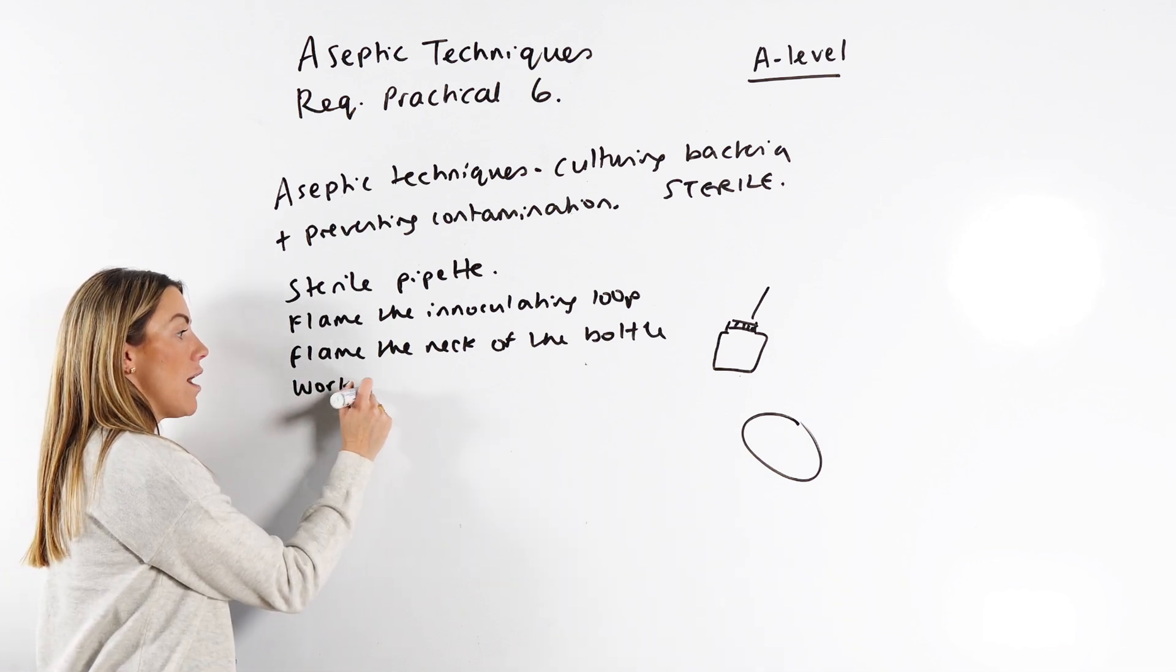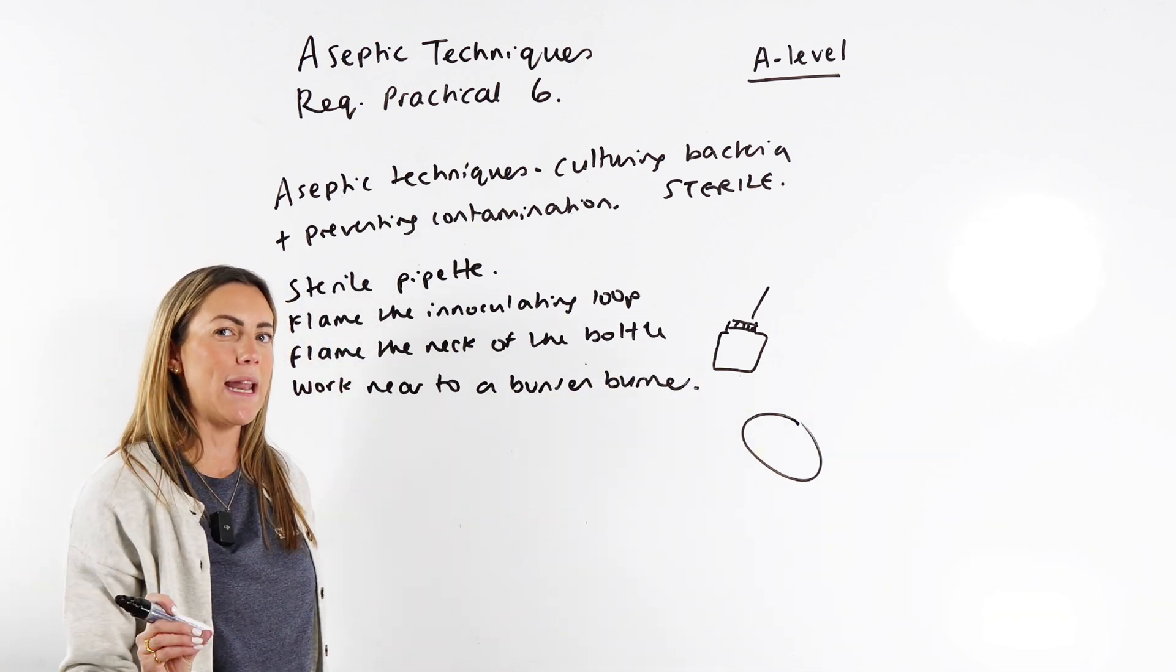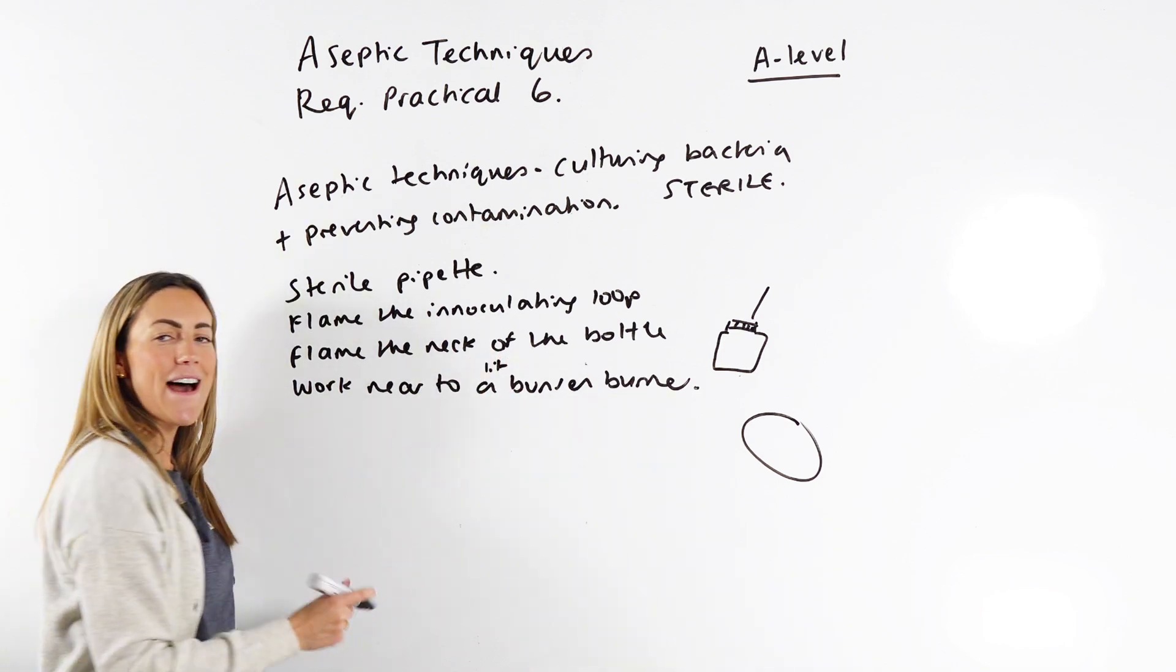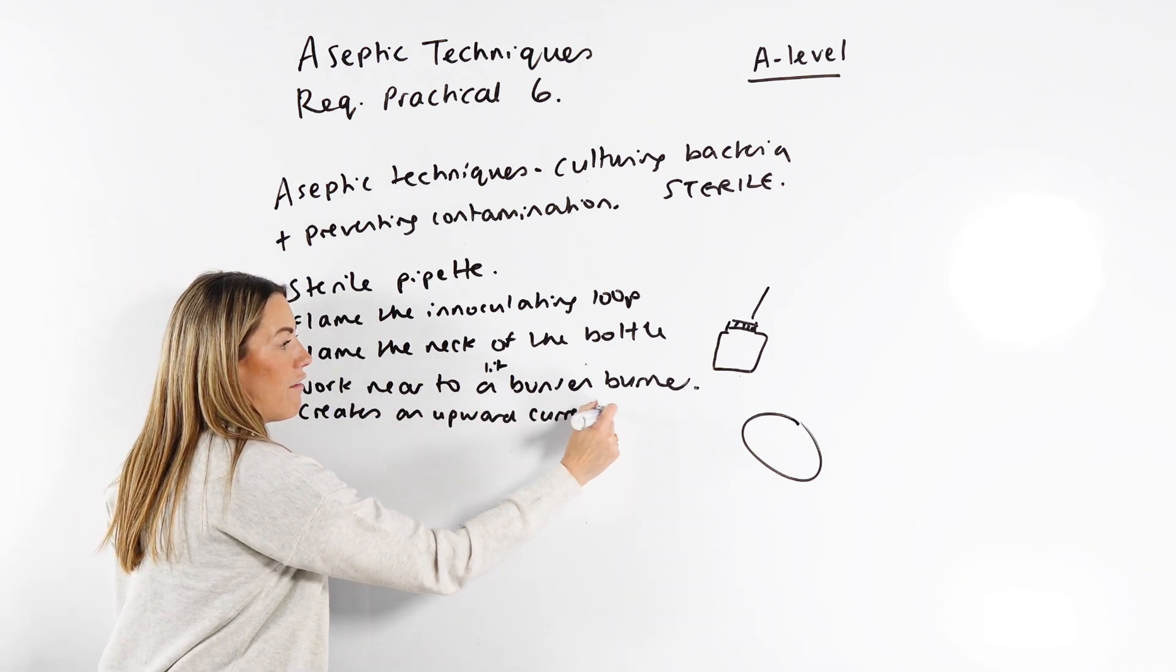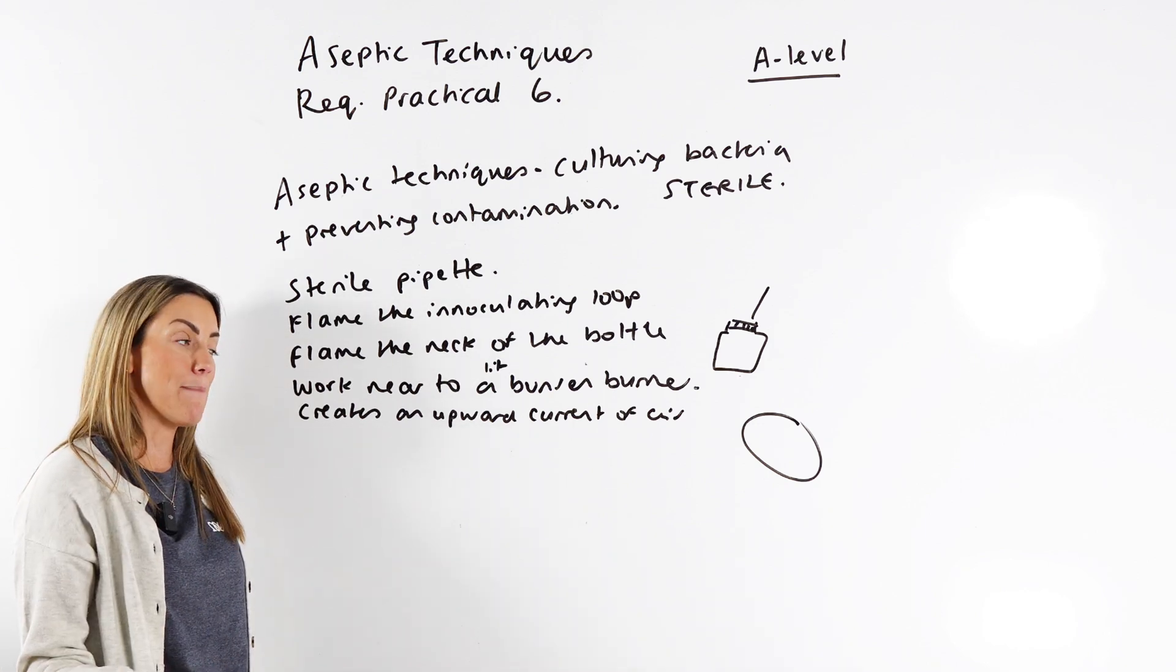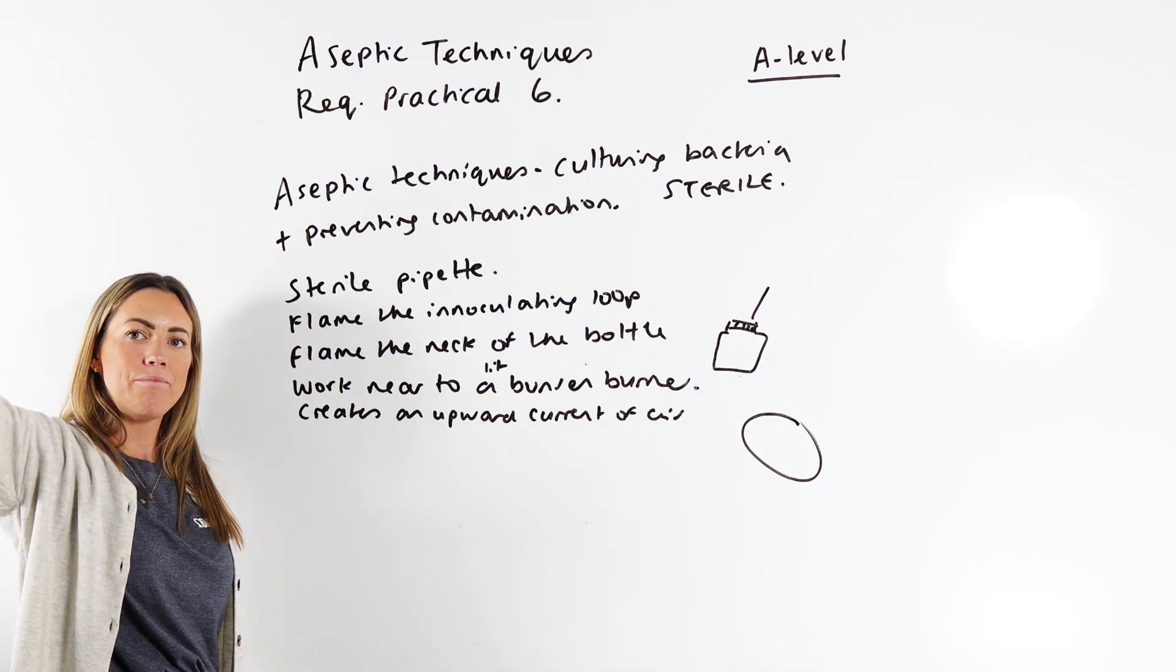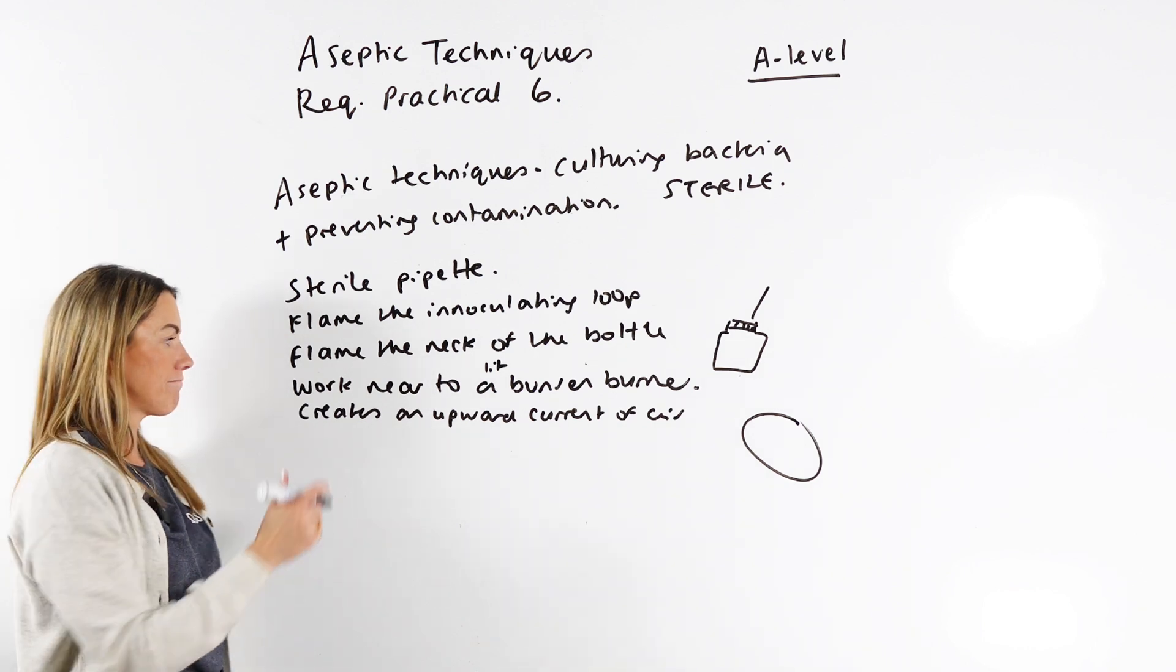You could also say work near to a Bunsen burner. But my advice would be make sure you can explain in your exam why that is helpful, why that's an example of an aseptic technique. If you have a lit Bunsen burner, it creates an upward current of air because hot air rises. So hopefully, if you're working close enough to that Bunsen burner, as the hot air rises, it's going to create that convection current, it's going to carry up any airborne microorganisms and move them away. So airborne microorganisms do not fall on your plate and do not contaminate your culture.